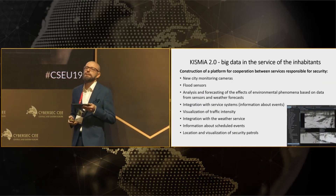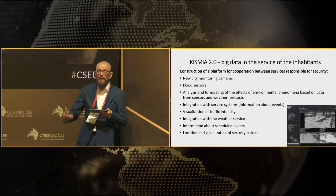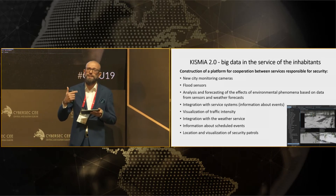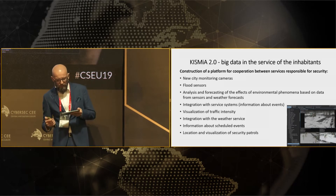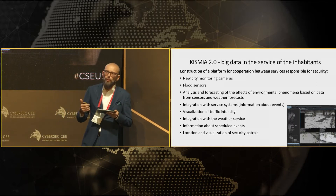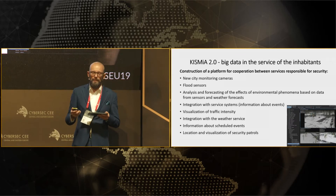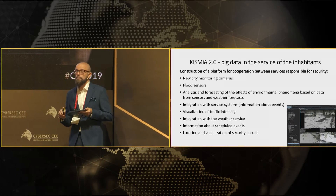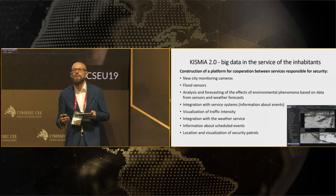We have been constantly working on expanding our system. Recently, we have added a new functionality: air quality sensors. Right now, we are taking a big step in the development of our system. Kismia 2.0, the next project, will be extended with fluid sensors, water forecasts, and traffic intensity. As a result, our system will be able to predict future phenomena and warn city services about possible danger.